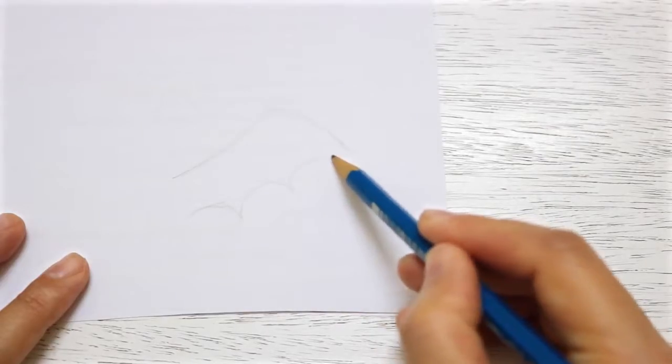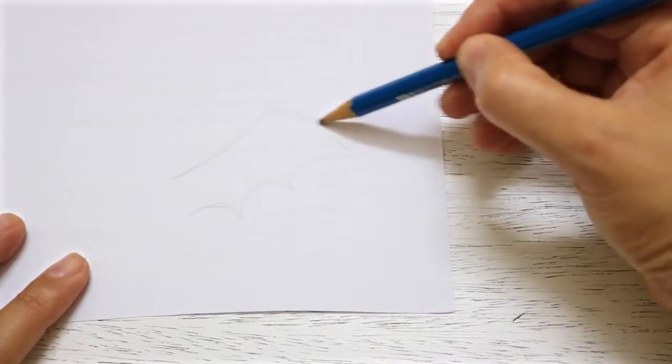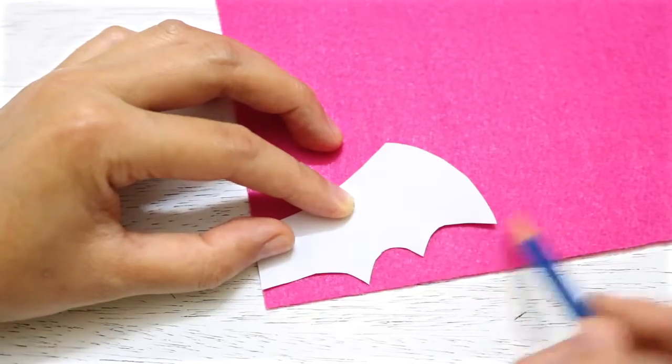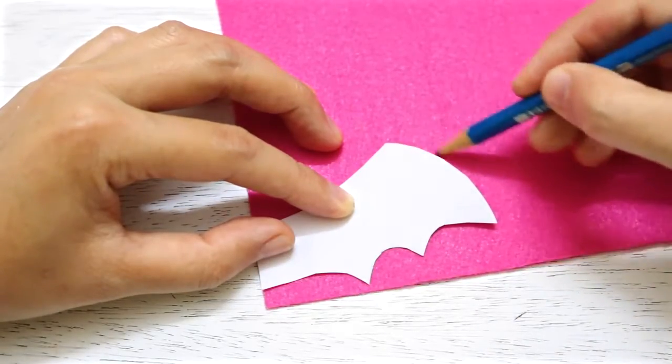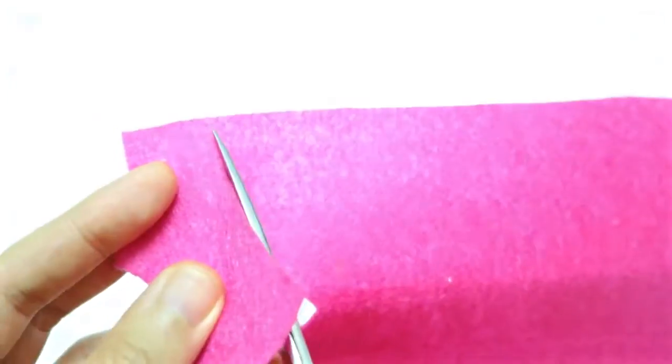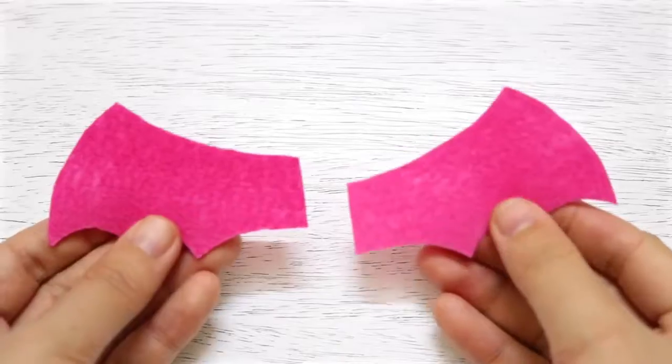To make the bat wings, sketch a wing on a piece of paper, cut it out, and then use it as a template to trace the wing onto a piece of felt. Cut it out and then repeat the same steps to make the second wing.